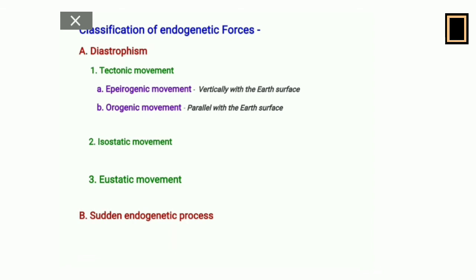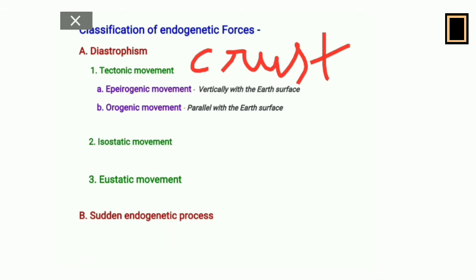Tectonic movement means crustal blocks or plates floating over the high-density asthenosphere will move either toward or away from each other, or vertically or parallel. There are two types of tectonic movement: epigenic and orogenic. In epigenic movement, the vertical upliftment or subsidence of the crustal blocks is most important — crustal blocks either uplift or subside vertically.